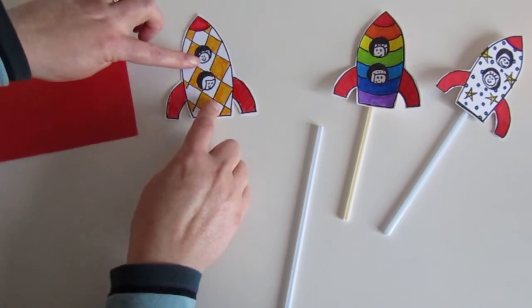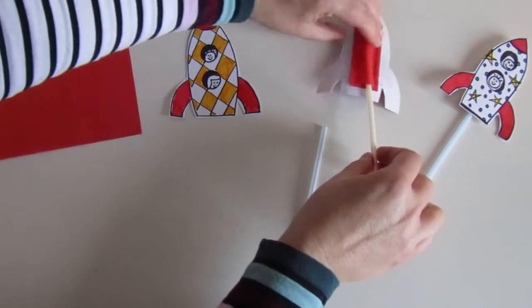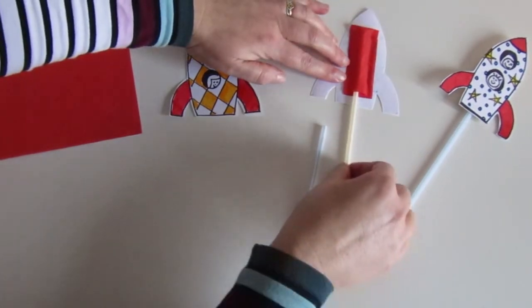OK, so now we've got our rocket. The last thing we need to do is the only tricky bit. We're going to fix the piece at the back so that the straw can go in and out.